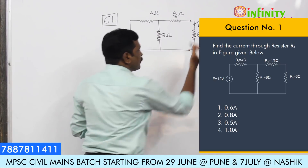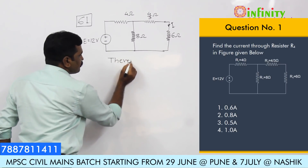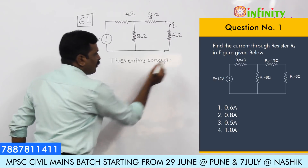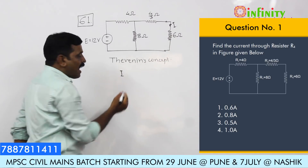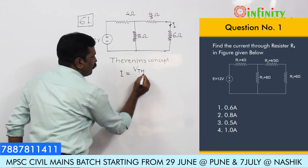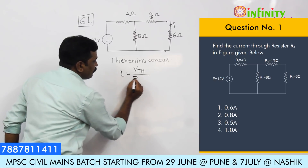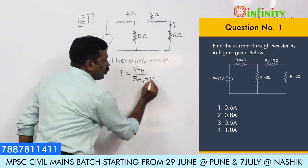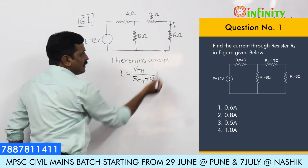To determine this we can use Thevenin's concept. According to that, the load current I is nothing but the Thevenin's voltage Vth divided by Thevenin's equivalent resistance Rth plus load resistance RL. Here load resistance RL is 6 ohm.